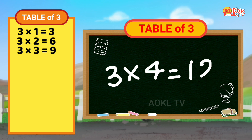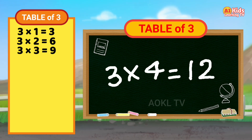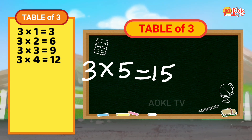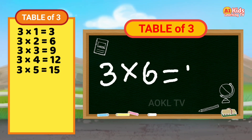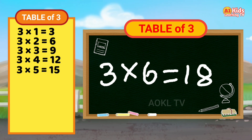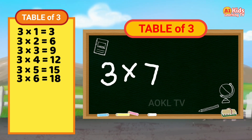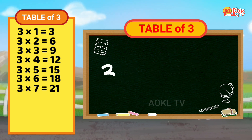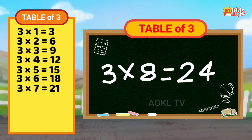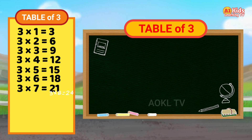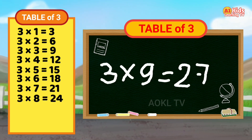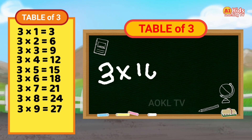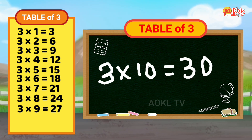Three four's are twelve. Three five's are fifteen. Three six's are eighteen. Three seven's are twenty-one. Three eight's are twenty-four. Three nine's are twenty-seven. Three ten's are thirty.